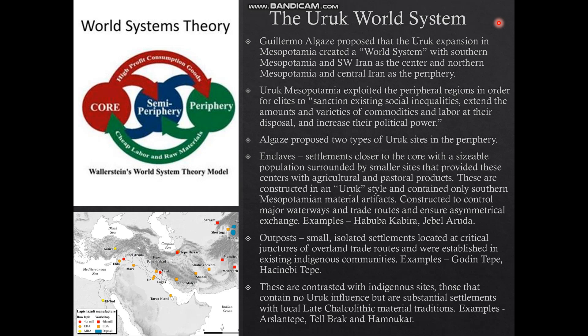Algaze also proposed outposts — small, isolated settlements much further out in the periphery, built at critical junctures of trade routes and established within existing indigenous communities. We can think about smaller groups, maybe 25 or 50 traders, who lived with existing communities to extract local resources and send them back to southern Mesopotamia. Examples include Godin Tepe and Hajinebi Tepe. These are contrasted with larger indigenous sites containing no Uruk influences but representing substantial settlements, such as Arslan Tepe, likely the head of a large regional polity competing with the Uruk system.